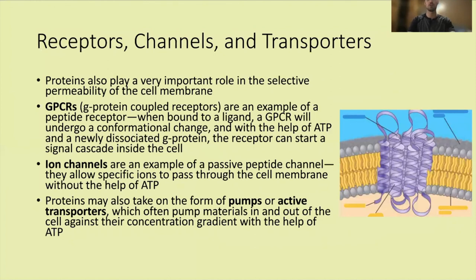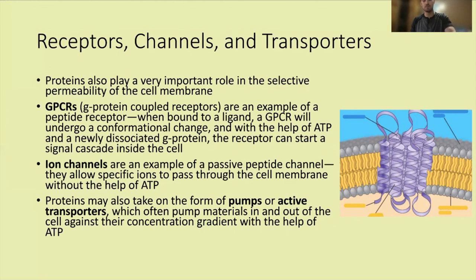Proteins also play an important role in the selective permeability of the cell membrane. GPCRs — G-protein coupled receptors — are an example: when bound to a ligand, a GPCR undergoes a conformational change and, with the help of GTP and a dissociated G-protein, starts a signal cascade inside the cell. Ion channels are passive peptide channels that allow specific ions to pass without ATP. Transporters are similarly structured but use ATP to pump materials in or out of the cell, often against their concentration gradient.